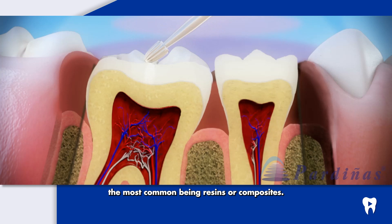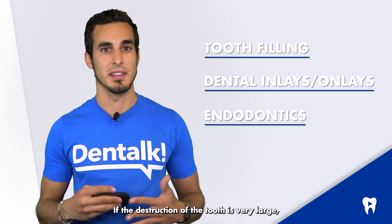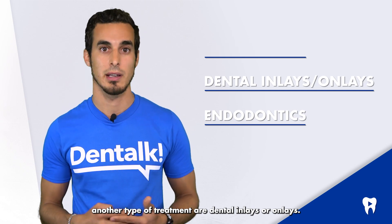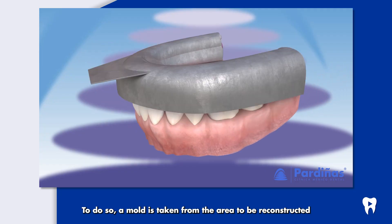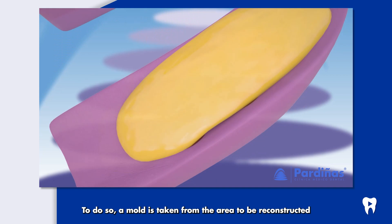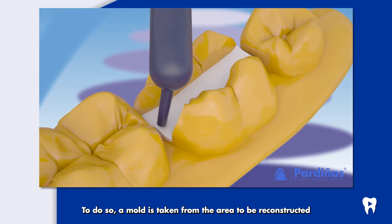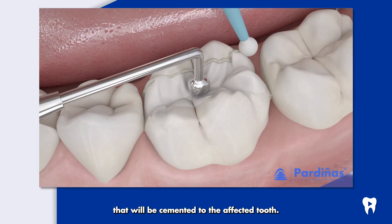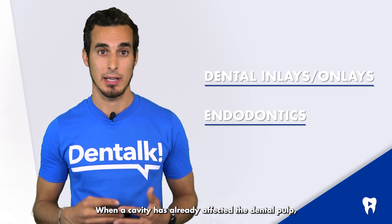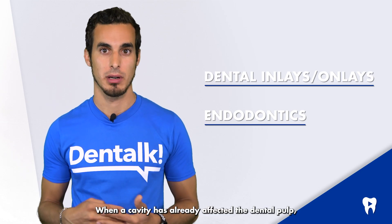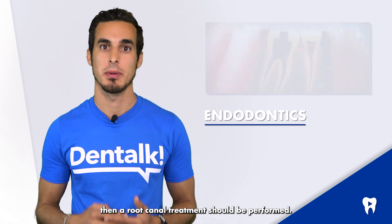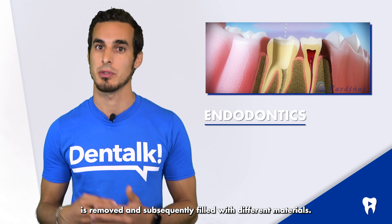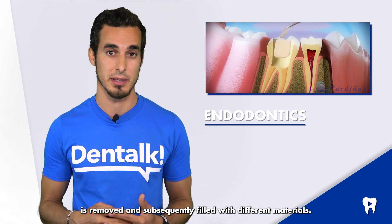If the destruction of the tooth is very large, another type of treatment involves dental inlays or onlays. To do so, an impression is taken from the area to be reconstructed to later manufacture the inlay or onlay that will be cemented to the affected tooth. When a cavity has already affected the dental pulp, then a root canal treatment should be performed. In this procedure, the nerve of the tooth is removed and subsequently filled with different materials.